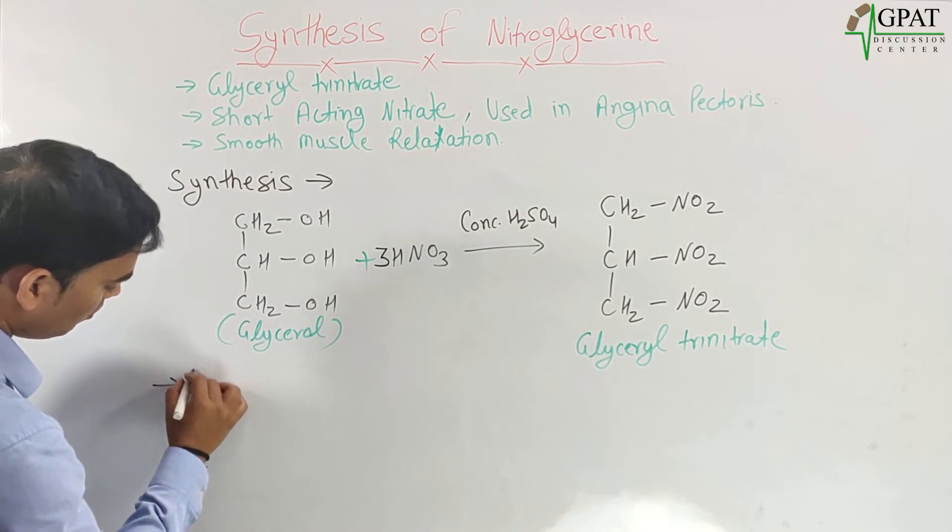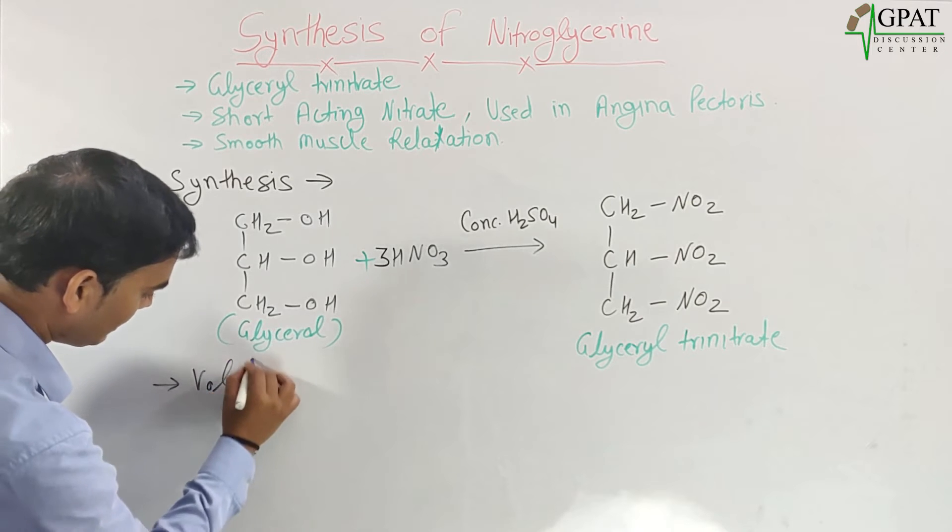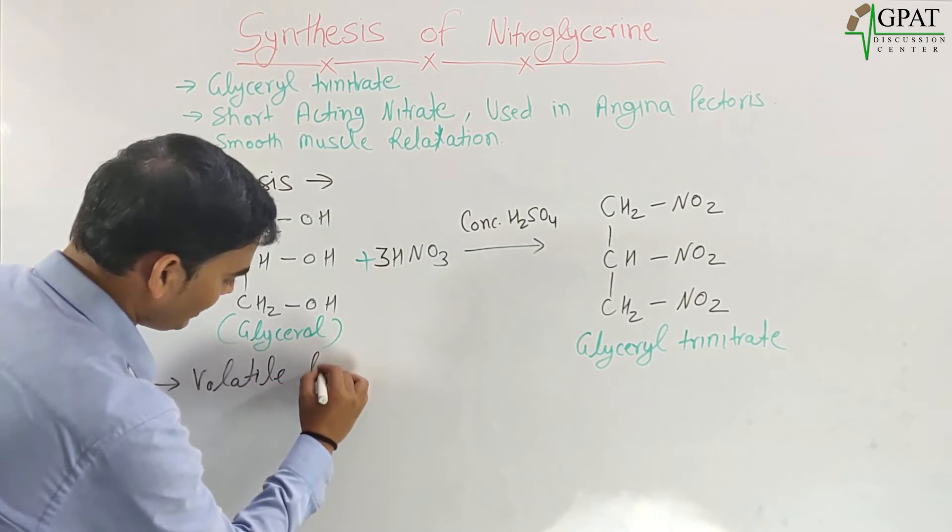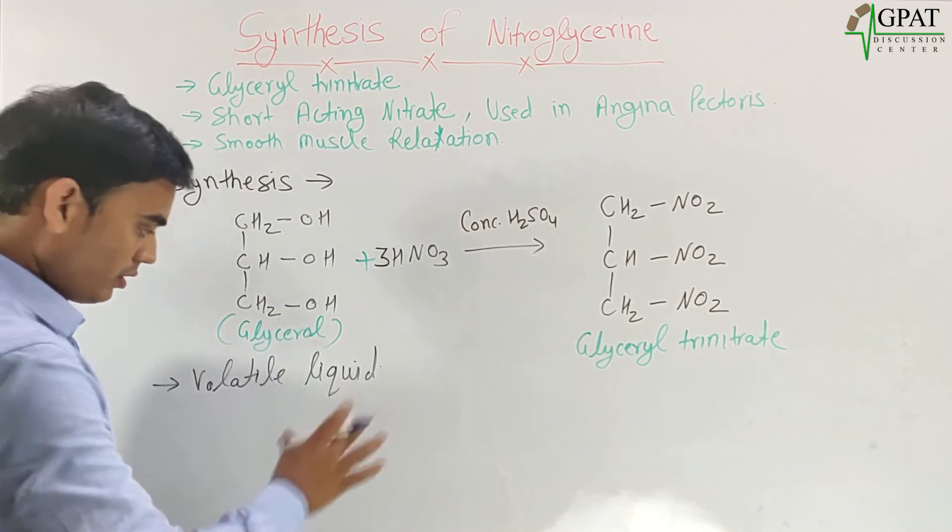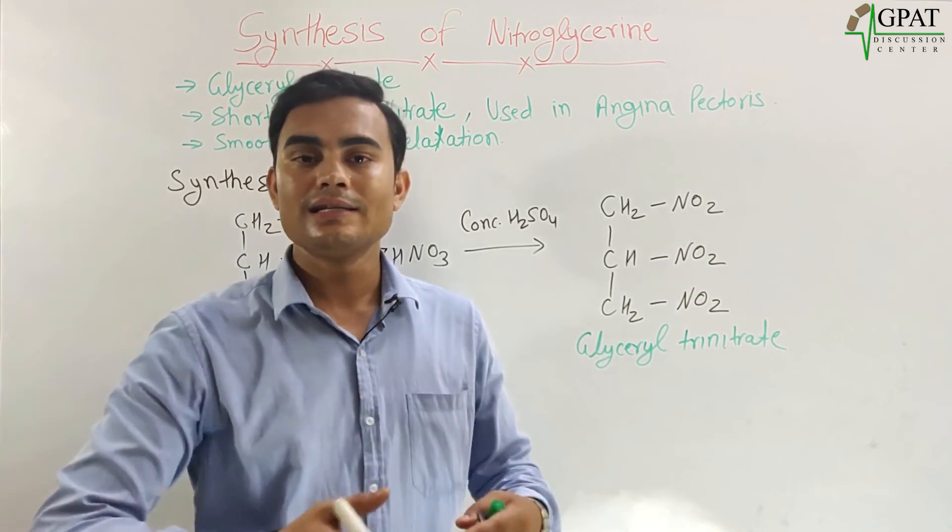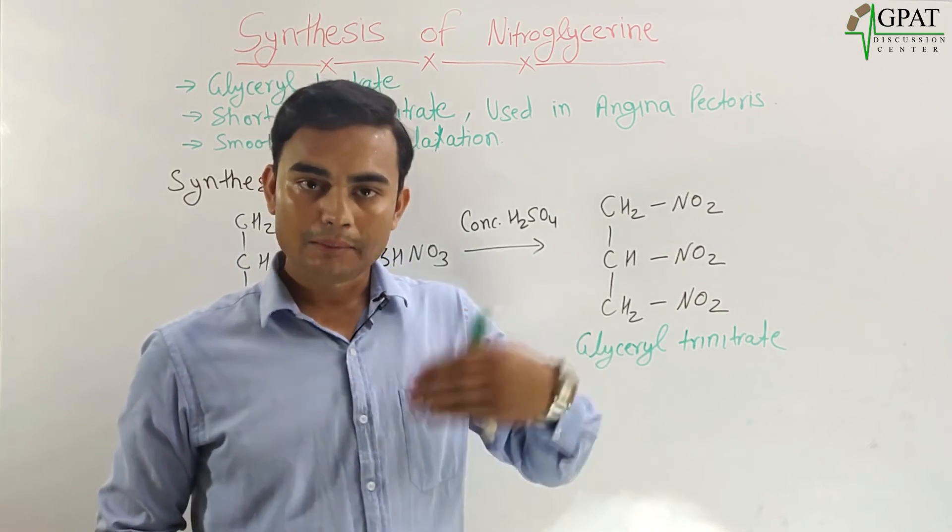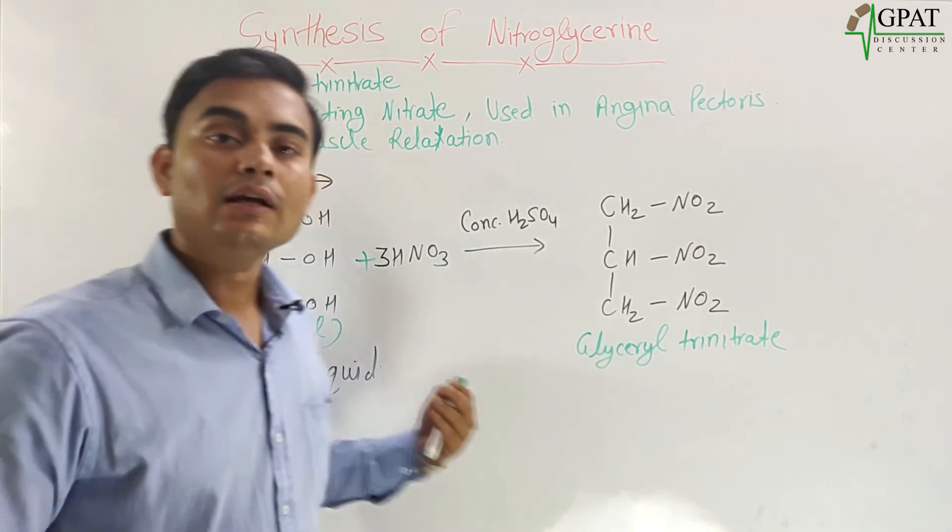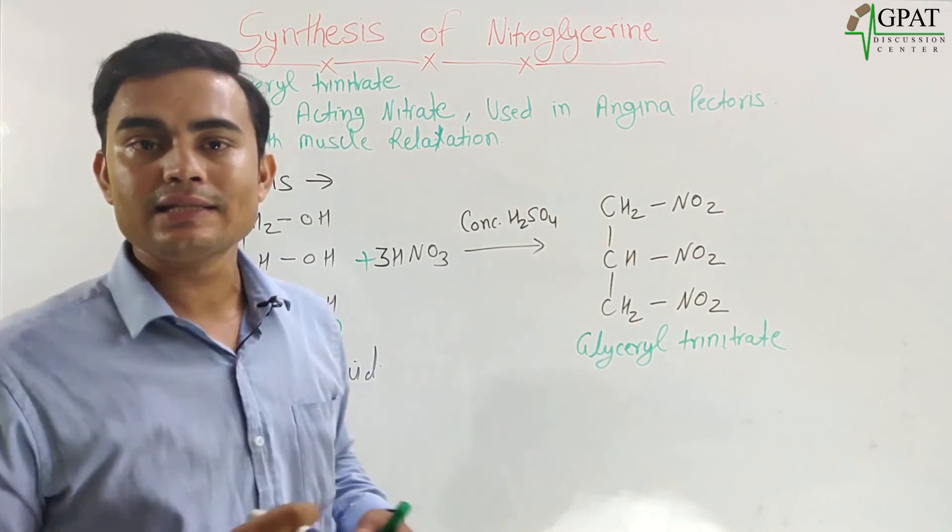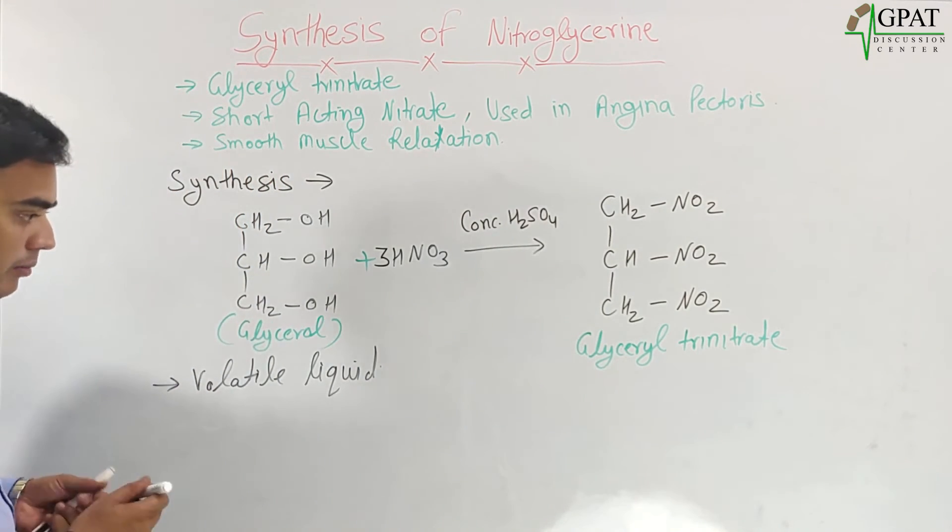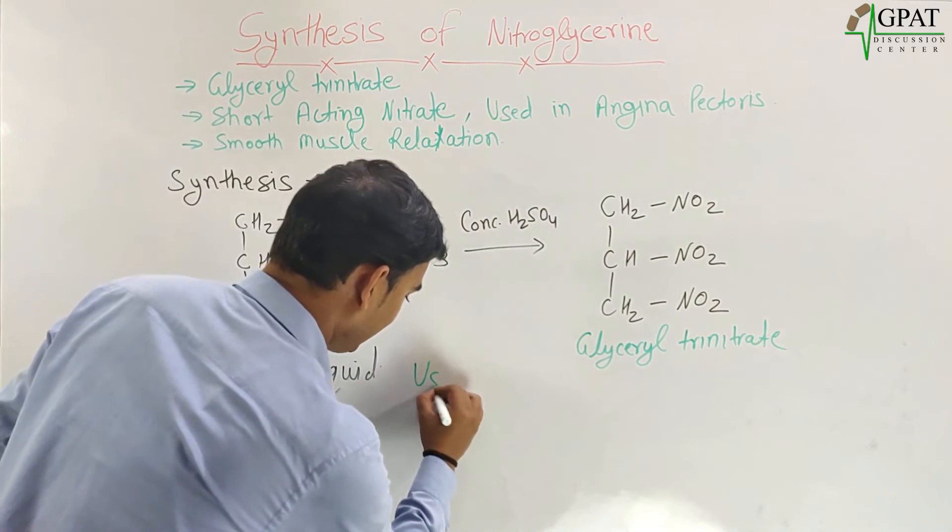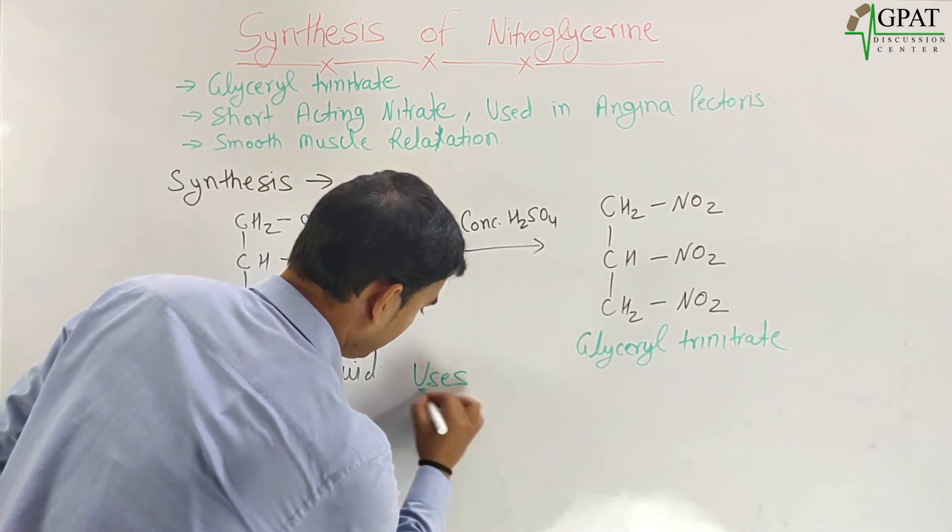Glyceryl trinitrate is mainly a volatile liquid. So the dosage form of this glyceryl trinitrate is given by the absorption of this volatile liquid into the matrix of the tablet.